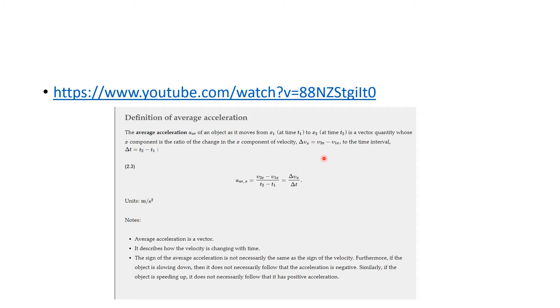The average acceleration, a sub-average, of an object as it moves from a point x1 at time t1 to a point x2 at time t2 is also a vector. You can speed up, or you can slow down, and it is the ratio of the change in velocity to the change in time. So that is the change in velocity over the change in time. And the units on acceleration, then, are the change in velocity is going to be meters per second. If I divide that by seconds again, I get meters per second squared.